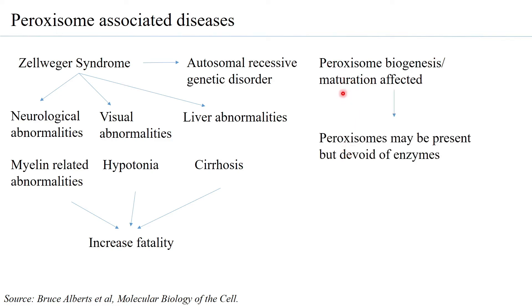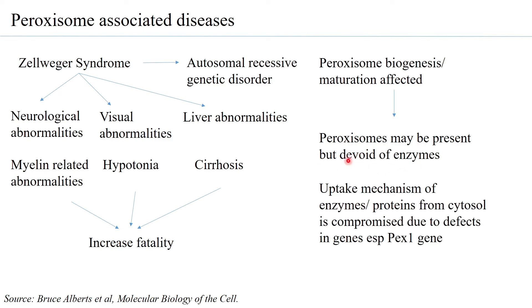Zellweger syndrome occurs because there is an abnormality in peroxisome biogenesis affecting peroxisome maturation. Peroxisomes may be present but lack the required set of enzymes, because certain transporters on the peroxisome surface cannot take up proteins, preventing the peroxisome from maturing into a fully functional organelle. It is not caused by just one protein — several proteins can be involved. For example, if the PEX1 gene is affected, proteins cannot be taken up from the cytosol, preventing proper peroxisome formation.